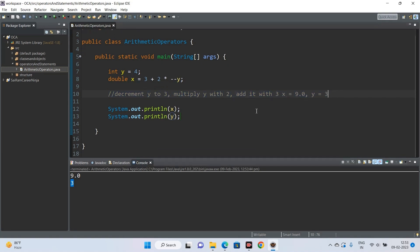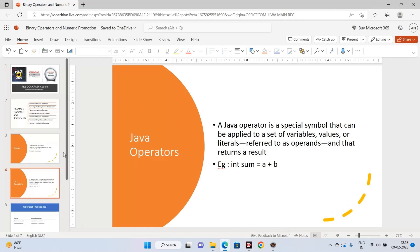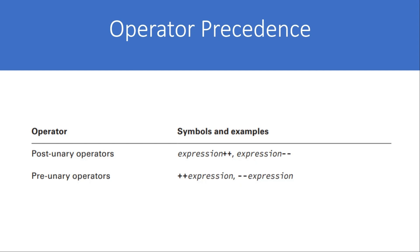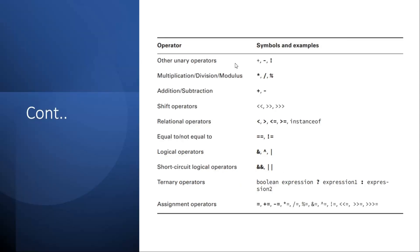Now let's look at the rules of operator precedence. Post-unary operators (expression++, expression--) come first, then pre-unary operators. After that come other unary operators like +, -, and !. Then multiplication, division, and modulus operators, followed by addition and subtraction. You follow this table in sequence to evaluate operators correctly.